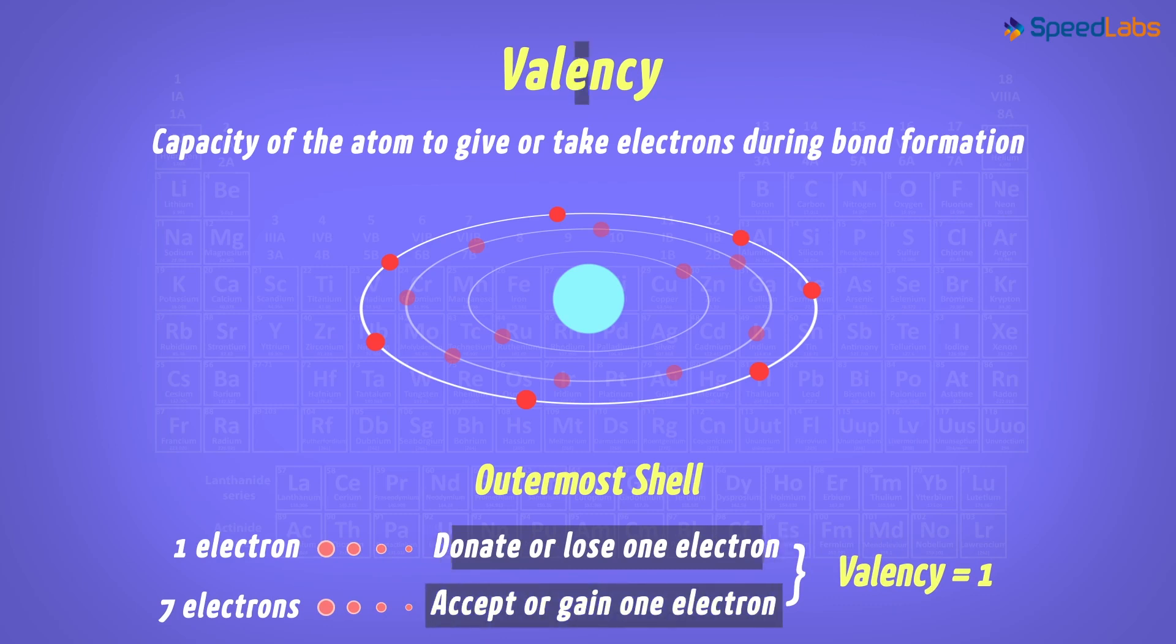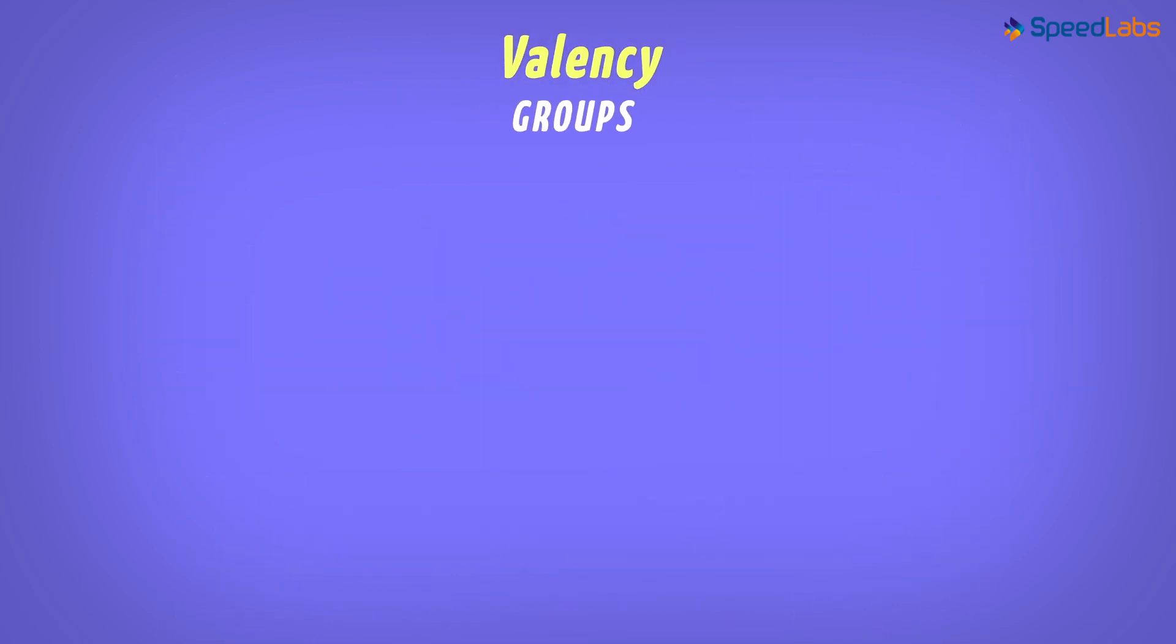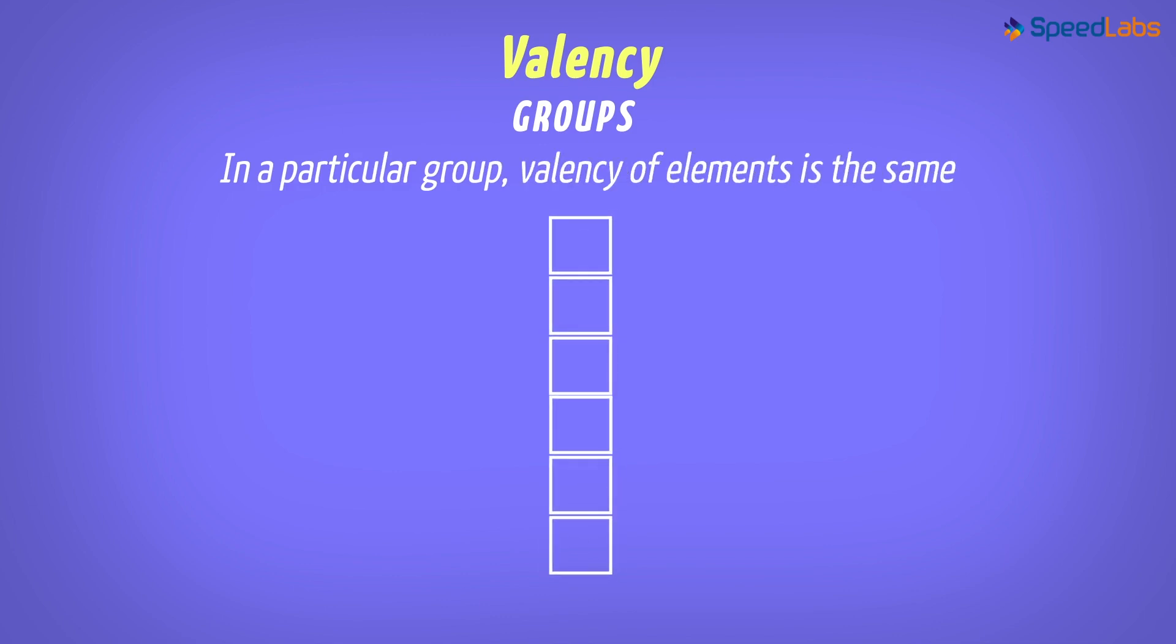So what makes valency an important trend across the groups and periods? Let us discuss about the groups first. In any particular group, we find that elements have the same valency.